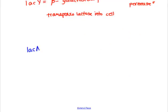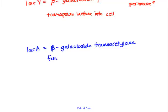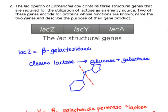The lacA gene encodes beta-galactosidase transacetylase, whose function is not entirely known - it does transfer acetyl groups between molecules during the utilization of lactose, but its function is largely unknown. Those are the three structural genes of the lac operon. In operons these three structural genes are grouped together, so if the operon is on, all three will be transcribed together as a polycistronic mRNA.